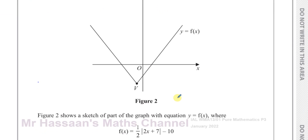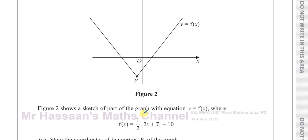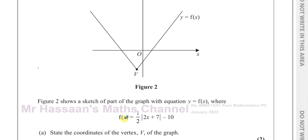This question is about a modulus function, which as you can see has a V-shape. Figure 2 shows a sketch of part of the graph with equation Y equals F of X, where F of X is a half times the modulus of 2X plus 7, minus 10. We've been asked to state the coordinates of the vertex of this graph, point V.